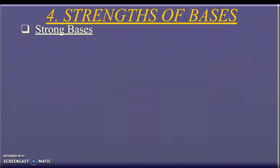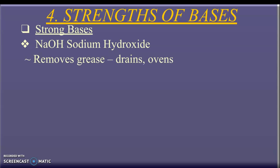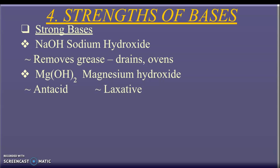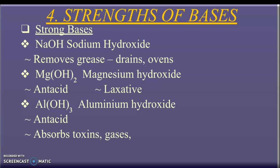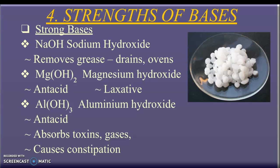So that leads us into the strengths of bases. Here are some examples of strong bases. You have your sodium hydroxide, which can remove grease in drains and ovens. Magnesium hydroxide, which can act as an antacid and a laxative. And aluminum hydroxide, which is also an antacid and can absorb toxins and gases. And it can also cause constipation. And then for your example, I have on the side there some sodium hydroxide pellets.